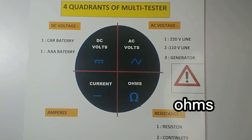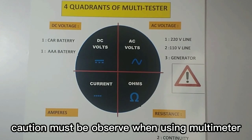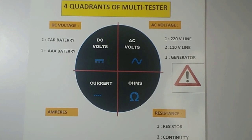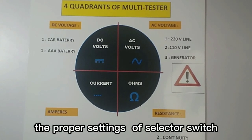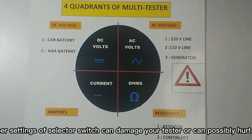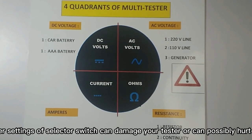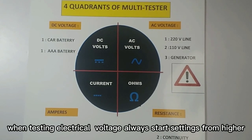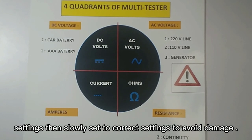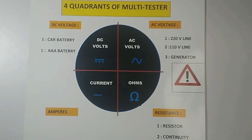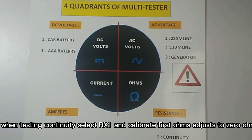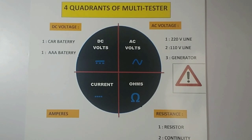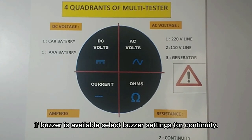Caution must be observed when using a multimeter. Before using your tester, you must familiarize yourself with the proper settings of the selector switch. Improper settings can damage your tester or possibly hurt you. When testing electrical voltage, always start from higher settings then slowly set to the correct setting. For continuity testing, select ohms and calibrate first — adjust to zero ohms. If a buzzer is available, select buzzer settings for continuity.